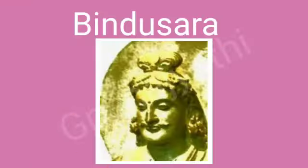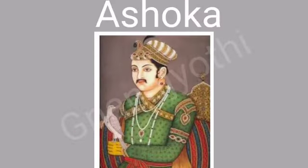Chandragupta Maurya was succeeded by his son Bindusara. During his reign, Bindusara expanded the empire up to Mysore. He was succeeded by his son Ashoka.